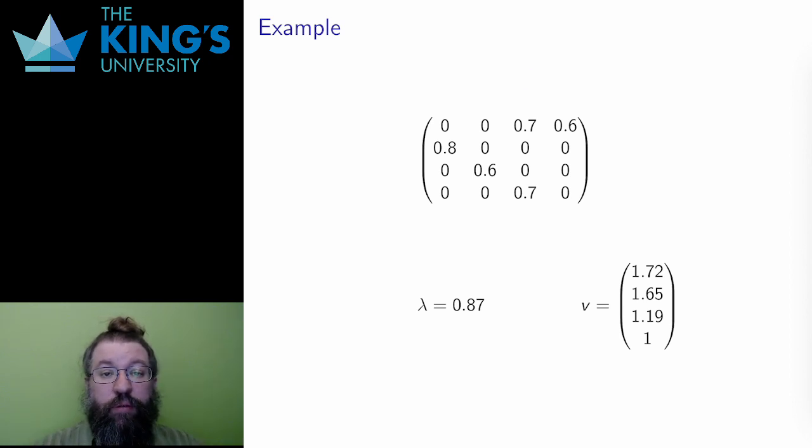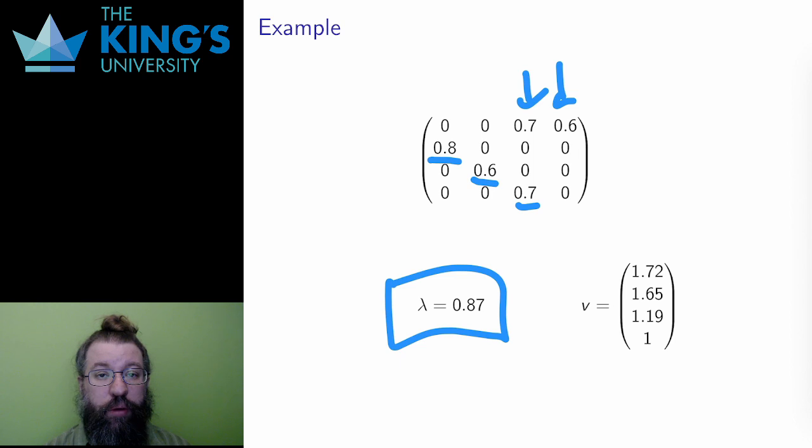So here is a Leslie matrix. There is fecundity from the top two age categories, 0.7 newborns for each individual in category 3, and 0.6 for each in category 4. The survival rates are 80% from 1 to 2, 60% from 2 to 3, and 70% from 3 to 4. The eigenvalue here is smaller than 1. That means that the population will decay.